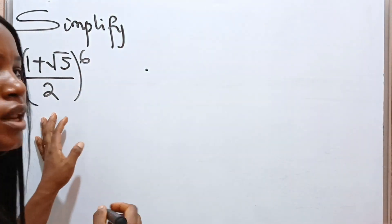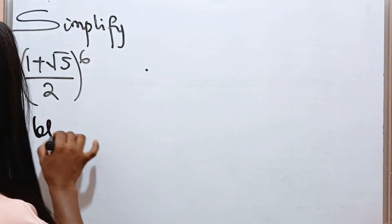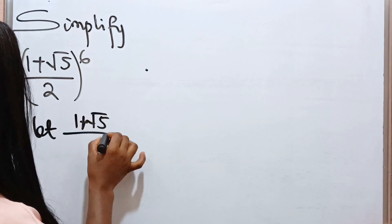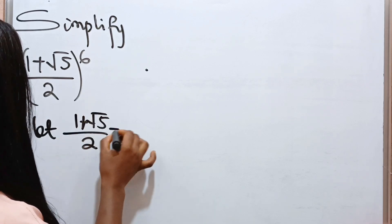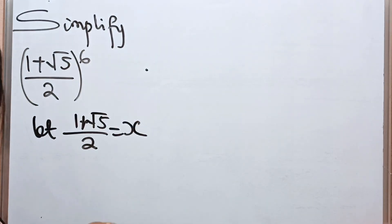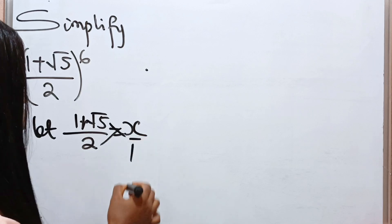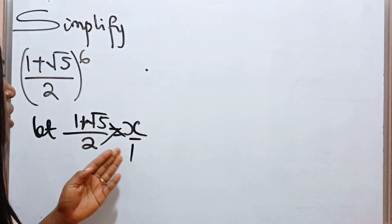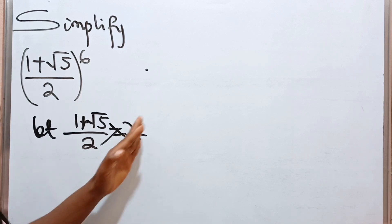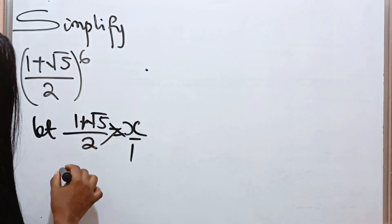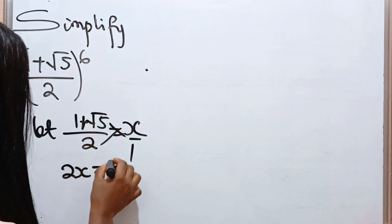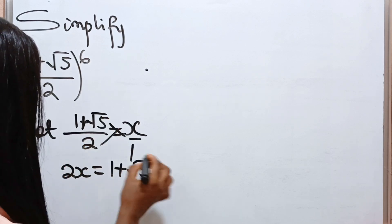So in my case, I'm going to call it x. We say: let (1 + √5) divided by 2 be equal to x. Then we do cross multiplication — 2 times x gives us 2x, which is equal to 1 plus √5.